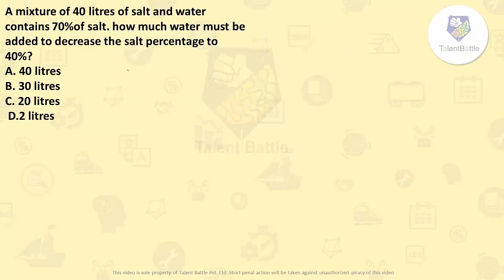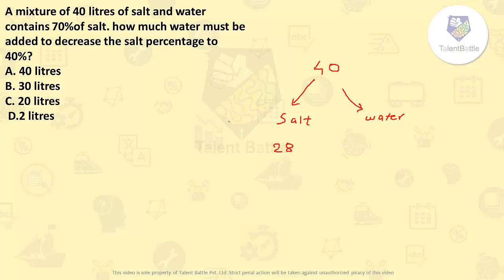Now let's check this question: A mixture of 40 liters of salt and water contains 70% salt. How much water must be added to decrease the salt percentage to 40%? Total mixture is 40 liters. 70% of 40 liters is 28 liters of salt — 10% of 40 is 4, so 70% is 4 × 7 = 28. The remaining 12 liters is water.